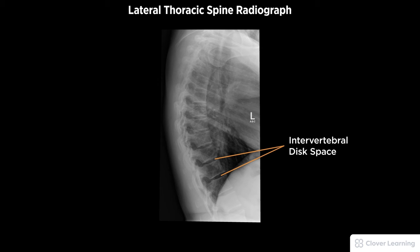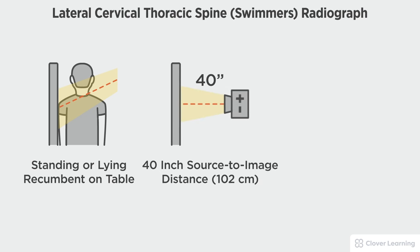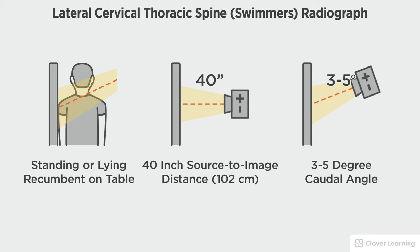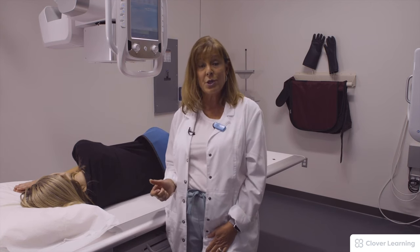Note that T1 to T3 are typically not clearly visualized due to superimposed anatomy. In this view we will be demonstrating the lateral cervicothoracic spine, or swimmer's view. The lateral swimmer's cervicothoracic spine should be performed with the patient standing at the upright bucky or lying on the table, with a 40-inch source to image distance and, if needed, a 3- to 5-degree caudal tube angulation depending on the patient's ability to depress the shoulder. The thoracic spine has a very dense area at the top, so a swimmer's view is very beneficial to show the upper thoracics.